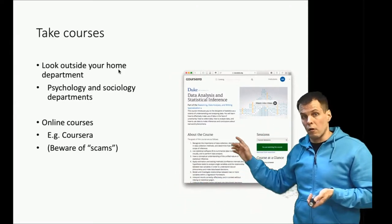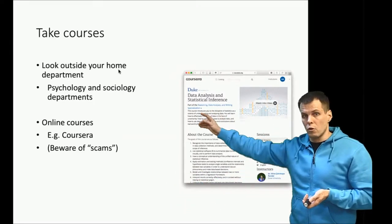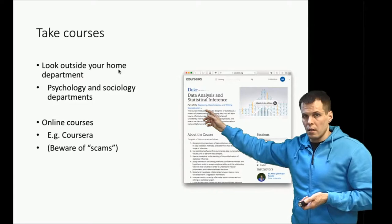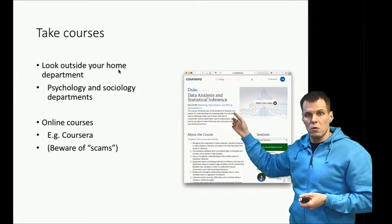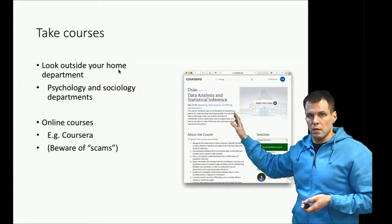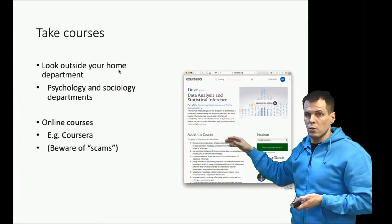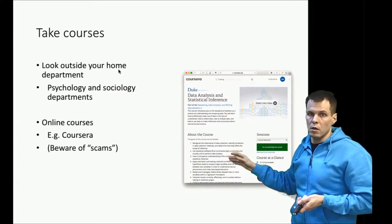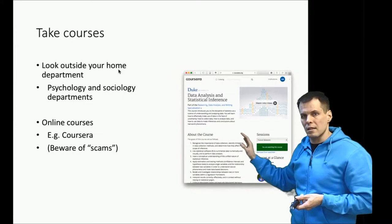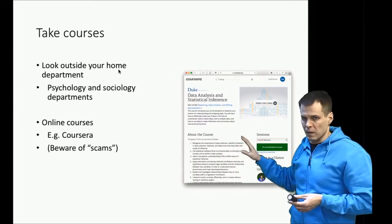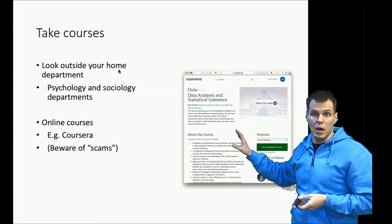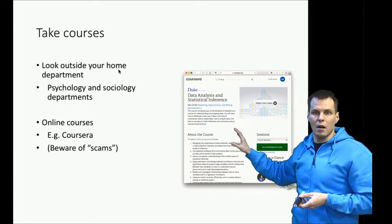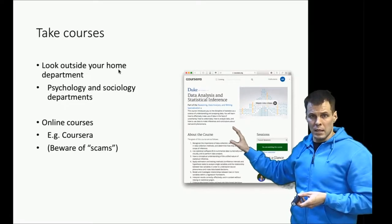I particularly recommend the Duke University courses on Coursera. 'Data Analysis and Statistical Inference' is a great course — they use R, cover the basics, and then advance to regression models. They don't cover research design as much as the basics of statistics, but it's a really valuable course and one of the most highly rated massive open online courses ever.